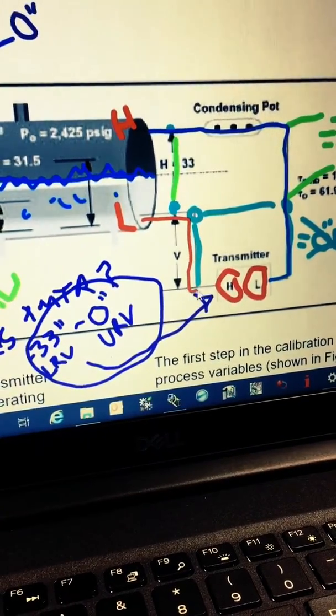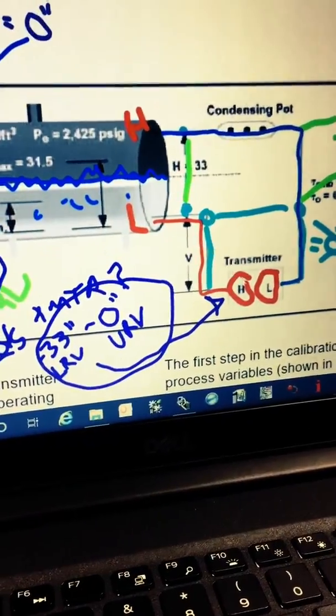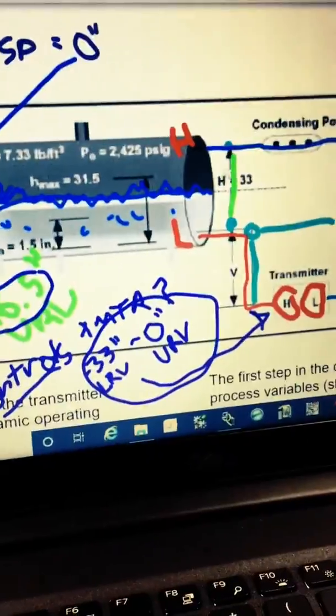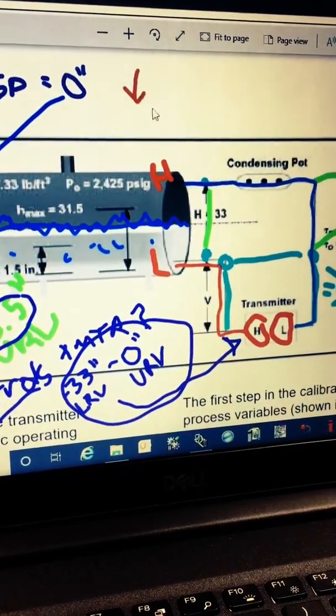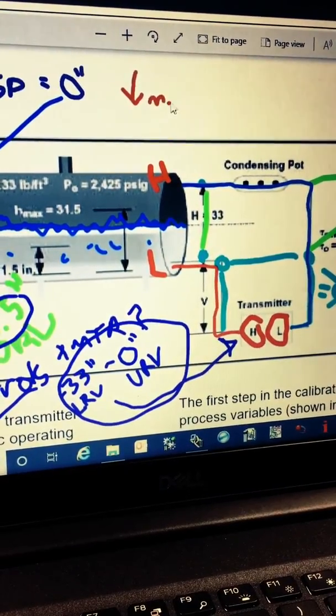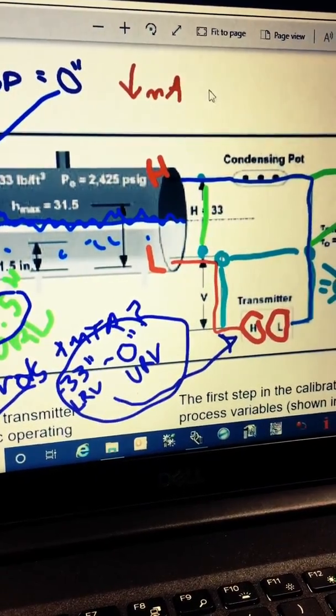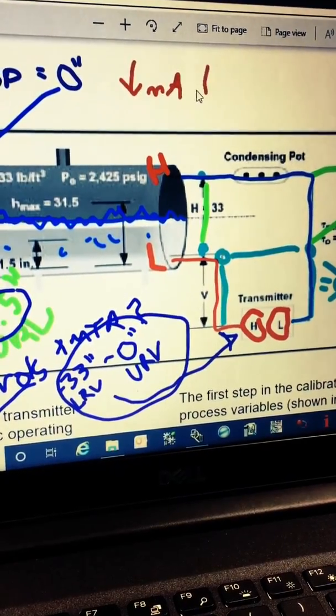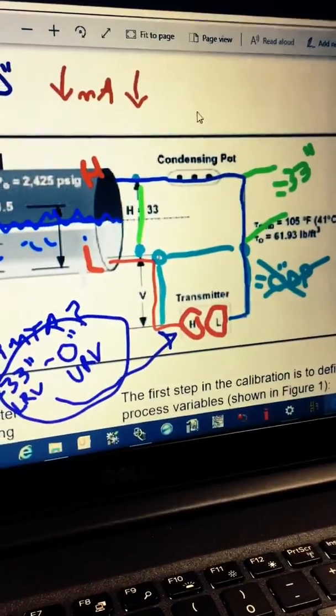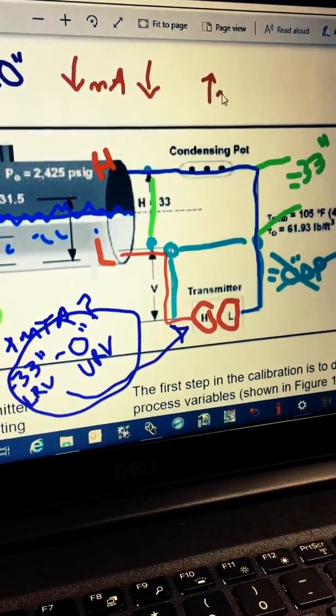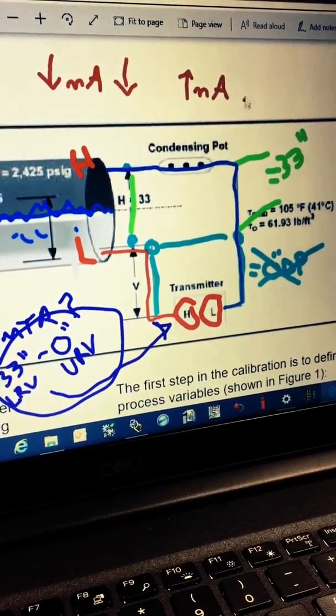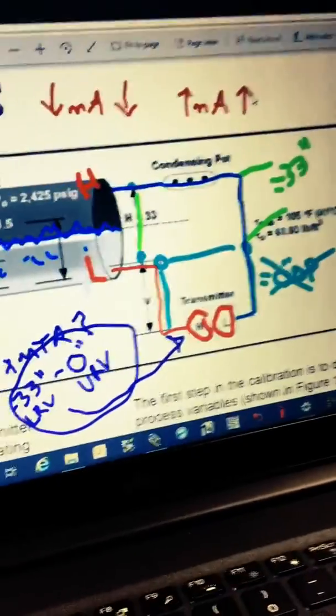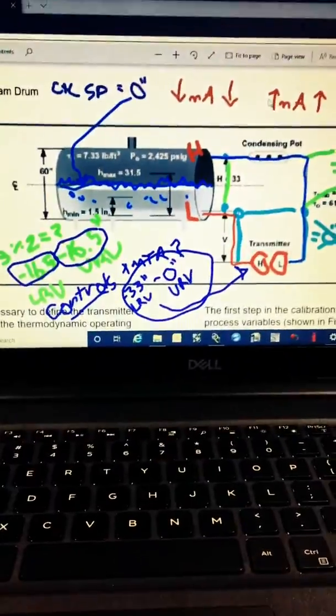And then, as the low-level leg, as that water goes up and down in the drum, the pressure on that leg is going to change. And the level signal from the transmitter to the control is going to change. Basically, as we go down in level, we want to go down in milliamp value. And, as we go up in level, we want to go up in milliamp value. Because we always want our process to go more positive when it comes to level, as the level goes up.